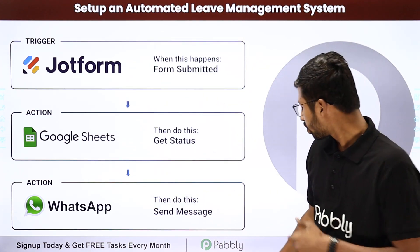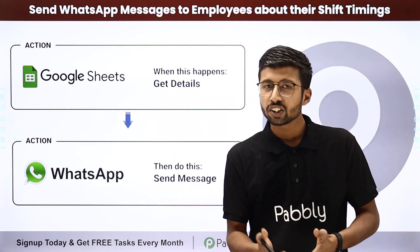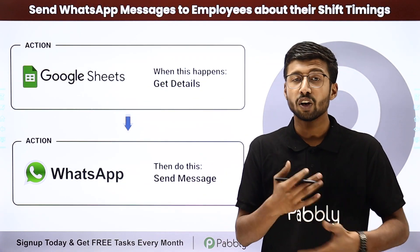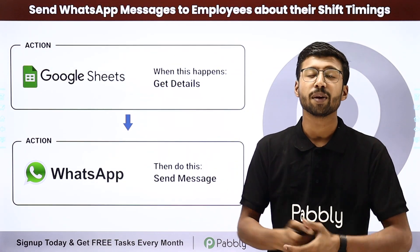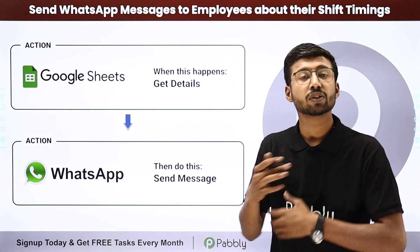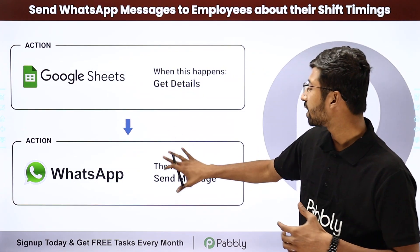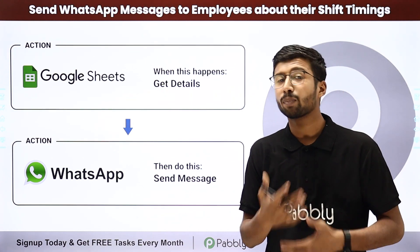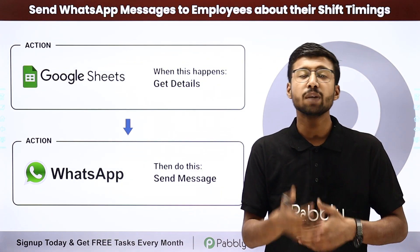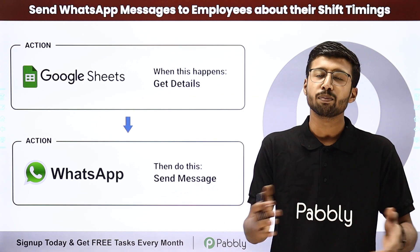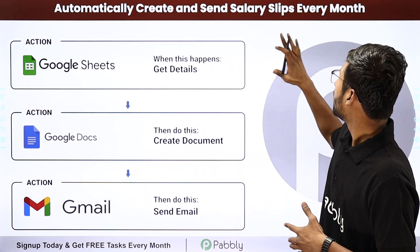Moving ahead to our next automation idea: send WhatsApp messages to employees about their shift timing. In your organization, if you are using multiple shift timings and your employees are working in rotational shifts, updating or sending them their next shift timing is very important. Using this automation, you just have to enter the shift timing details of your employees into a Google Sheet along with employee details and phone numbers. Automatically, you can send them a WhatsApp message, SMS, email, or any other platform to update them regarding their shift timings. This way, you don't have to manually contact each team member to update them about their shift timings.